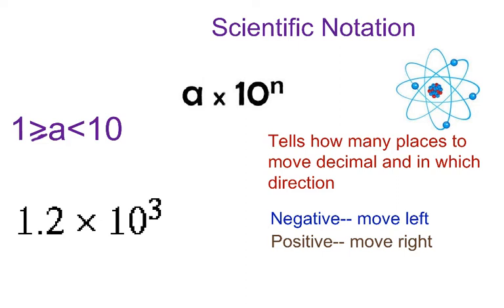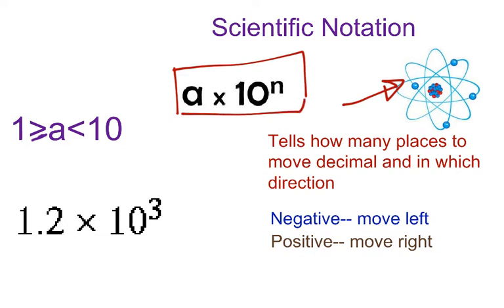For example, if you were doing a report and you had to give some details about particles in the atom, you will encounter what we just talked about. It has this form right here. A would represent some number, and that number would be greater than or equal to one but less than 10. This other part, which is the exponent part, also gives you some valuable information — it tells you how many decimal places you have to move and also in which direction.